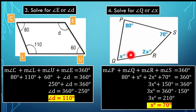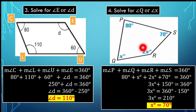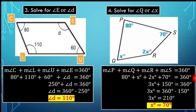So angle Q is 70 degrees. For angle R, that is 2 times 70, a total of 140 degrees. To double check: 70 plus 140 gives 210; 210 plus 70 gives 280; 280 plus 80 gives a total of 360 degrees. That confirms our answer.